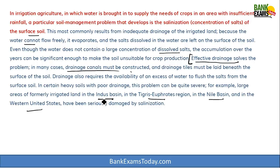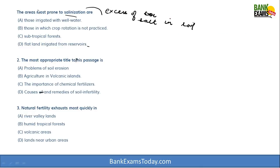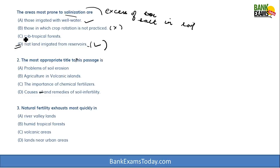Now we attempt the questions. Question 1 — areas most prone to salinization: not those irrigated with well water, not where crop rotation is not practiced, not subtropical forests, but flatland irrigated from reservoirs — flatland means no drainage system and water comes from reservoirs, the main cause of salinization. Answer is D. Question 2 — most appropriate title: not soil erosion, not volcanic islands, not chemical fertilizers — it is 'causes and remedies of soil infertility.' Answer is D.